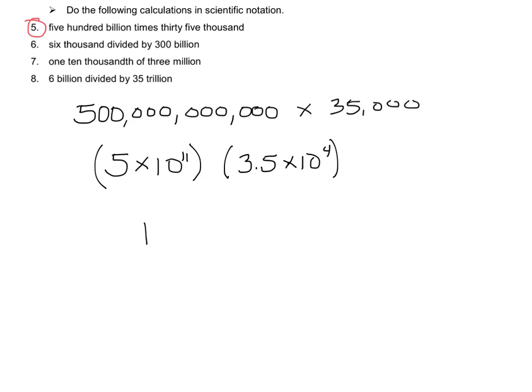Now the way you multiply with exponents in scientific notation: you say 5 times 3.5. So 5 times 3 is 15, and 5 times 0.5 is 1.5, so 15 plus 1.5 is 17.5. Do not use a calculator. So 17.5 times 10 — and then we add the exponents when multiplying — gives 10 to the 15th. You could leave your answer as 17.5 times 10 to the 15th, or rewrite it as 1.75 times 10 to the 16th. Either answer is acceptable; they are the same. You could write it out with all those zeros, but that's just going to take a lot of time.